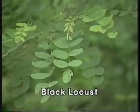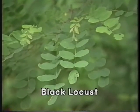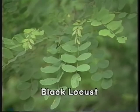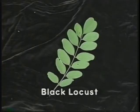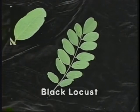Black locust is a compound leaf arranged on the twigs alternately. The seven to eleven leaflets are pinnately arranged on the main axis. They are about the size of a quarter and elliptical in shape. The leaflet margins are entire and a dull green in color.